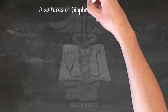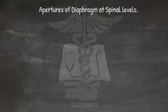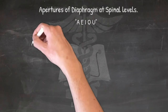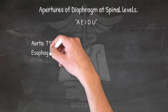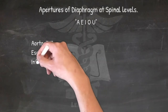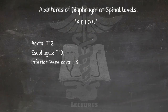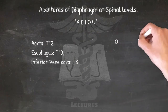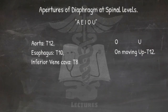For the apertures of the diaphragm at spinal levels, remember the vowel sounds: aorta at T12, esophagus at T10, inferior vena cava at T8. The vowels O, E, I can be used to remember moving up from T12.